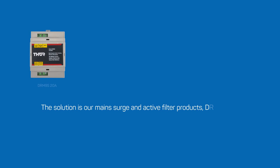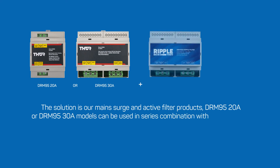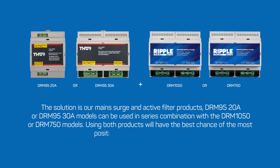The DRM-9520 amp or DRM-9530 amp models can be used in series combination with the DRM-1050 or the DRM-750 models. Using both products will have the best chance of the most positive outcome in these cases.